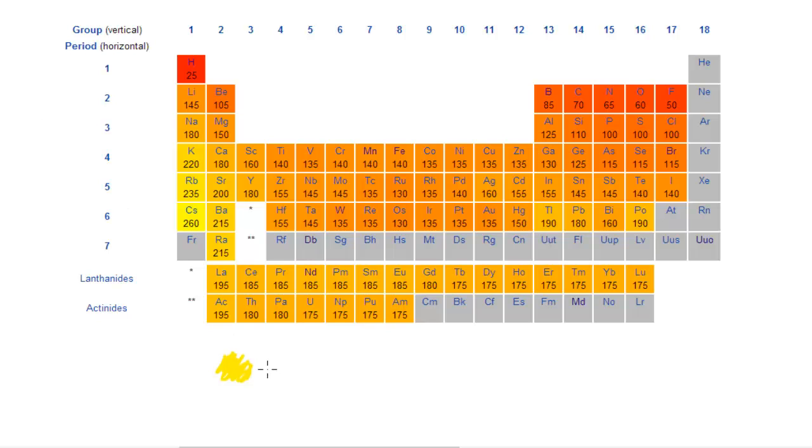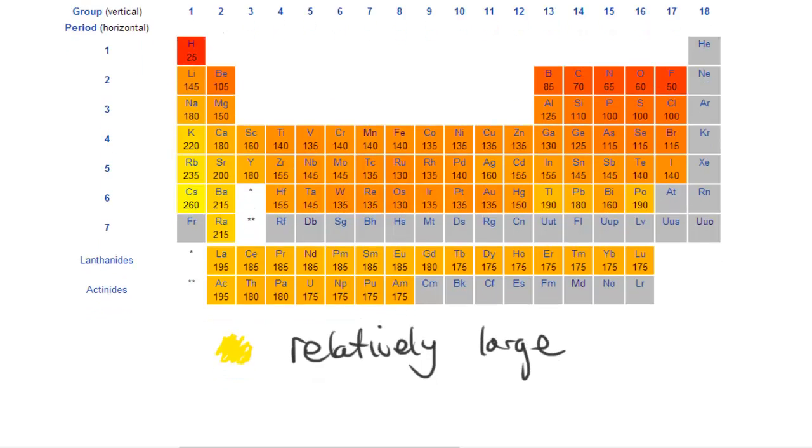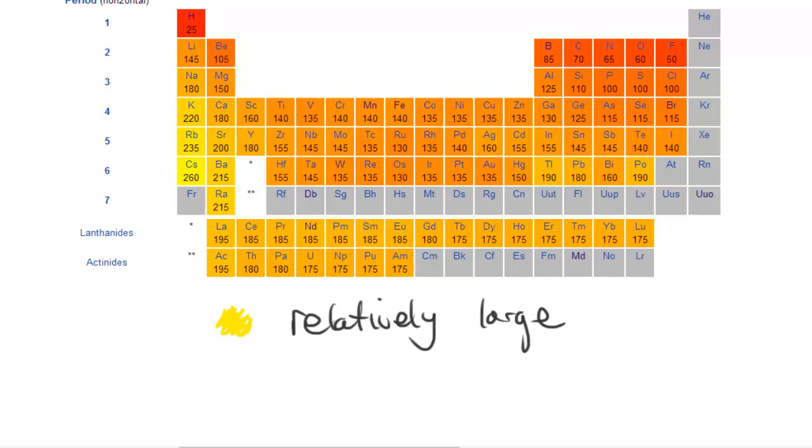Yellow means relatively large, and red, as you can see, is for something like hydrogen which has a really small atomic radius. Red means relatively small atomic radius.